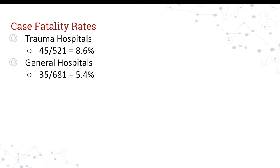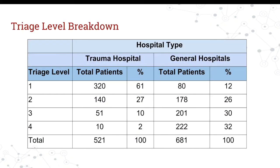So let's start breaking down the math — it's really basic: addition, division, math you've been doing since you were a kid. On one column we have trauma hospitals, another we have general hospitals, and you see the breakdown of different triage levels, one through four. Right off the bat, trauma hospitals get a much higher portion of patients that are triage level one, whereas general hospitals see a much lower population at triage level one — which makes sense, that's what you'd expect to see.